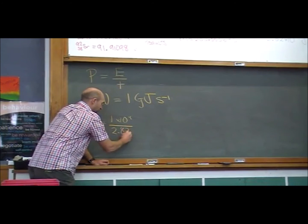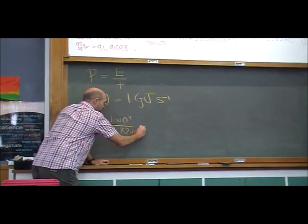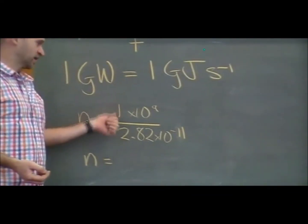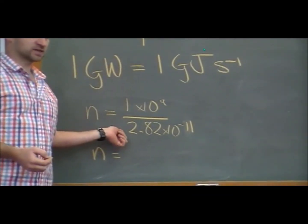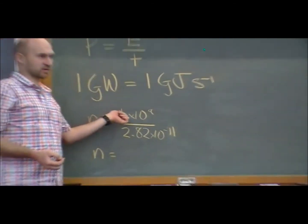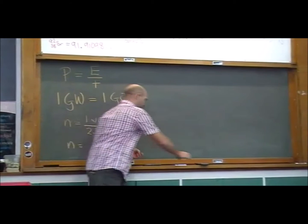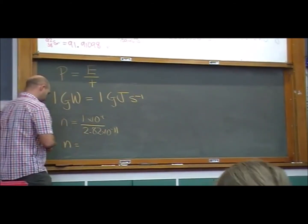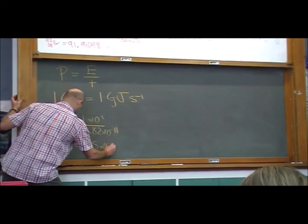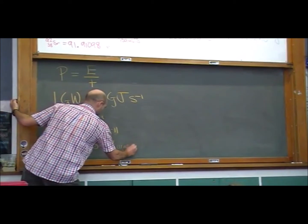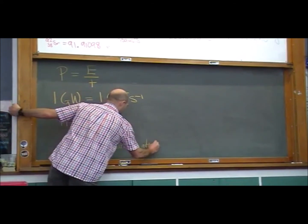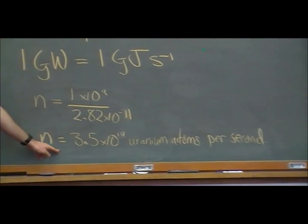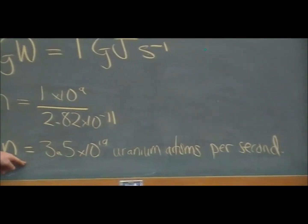2.82 times 10 to the negative 11. That's just going with that one big thing is made up from lots of little things. So if we want to know how many little things we divide the big thing by the little thing to find out how many makes it up. And we get some enormous number. Anyone else get 3.5 times 10 to the power of 19 uranium atoms per second.